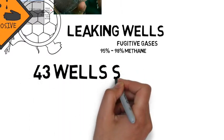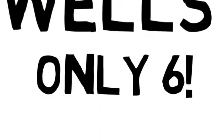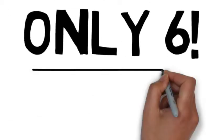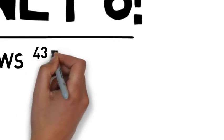CSIRO researchers conducted a survey of 43 coal seam gas wells in New South Wales and Queensland. And of the 43 wells, only 6 were actually not leaking. Yes, only 6. The researchers say that the wells in most cases are leaking 3 grams of methane per minute, equivalent to the methane emissions from around 30 cows.